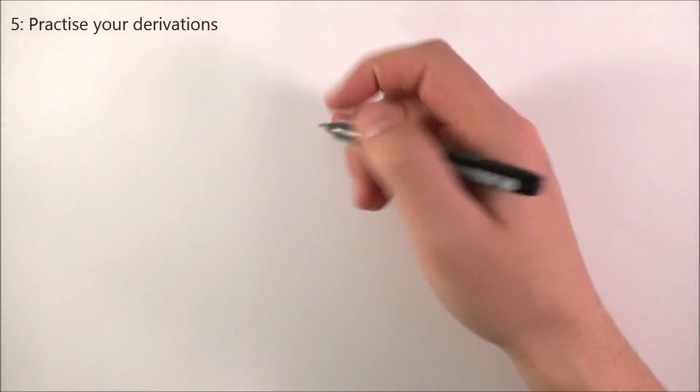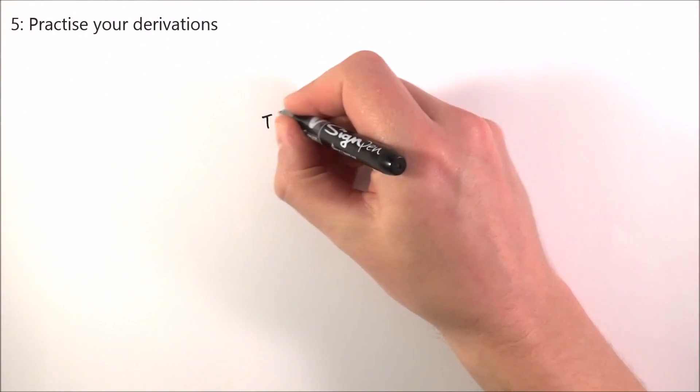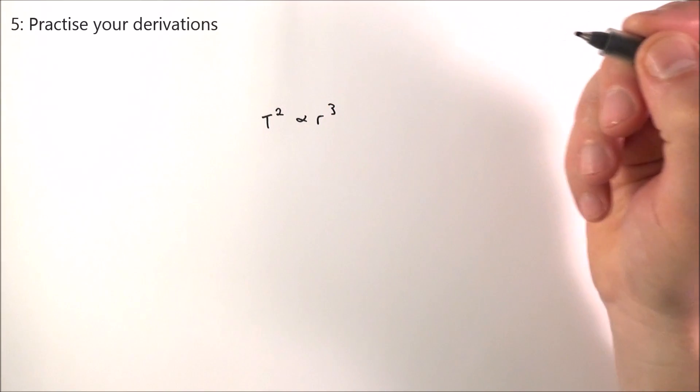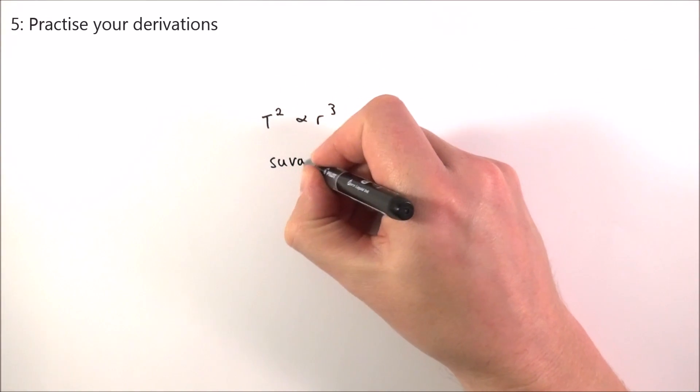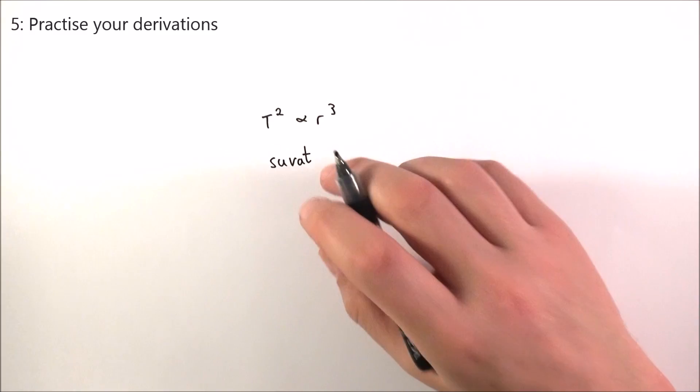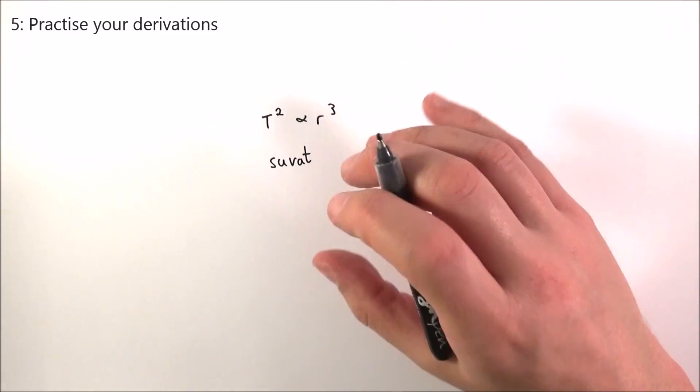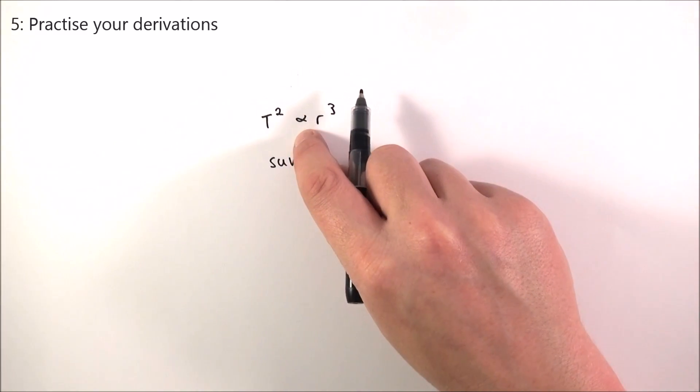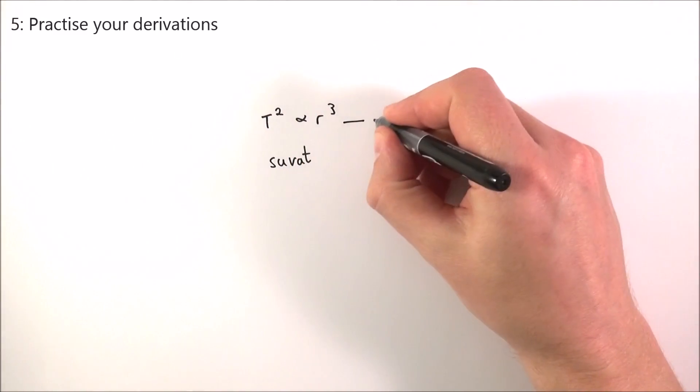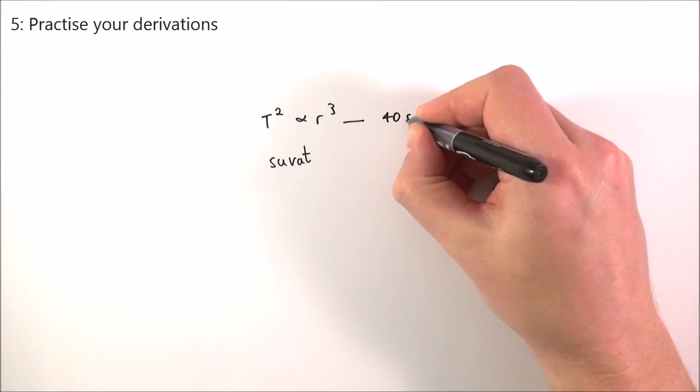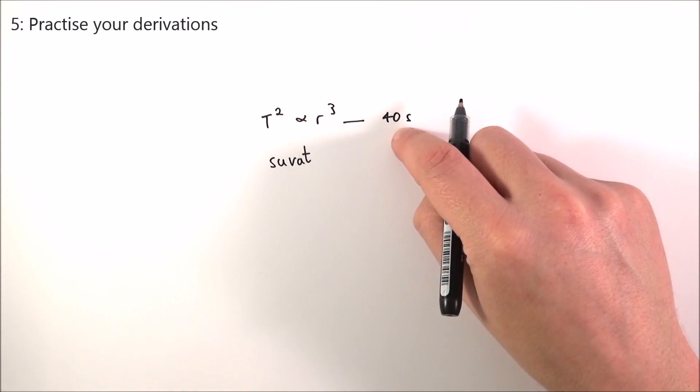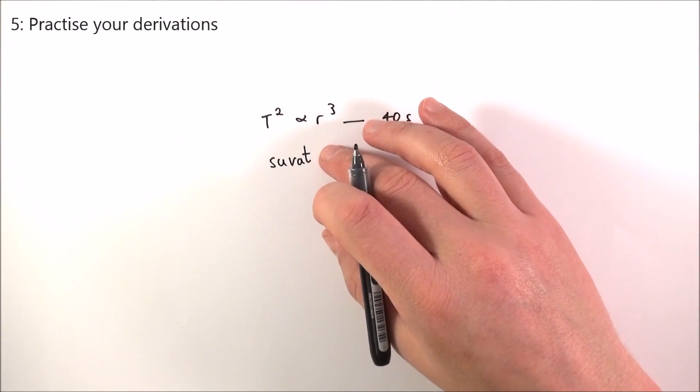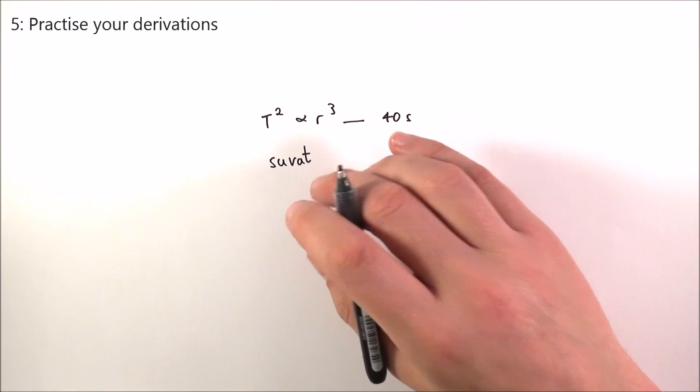Number five are the derivations. For example at A-level year 13 you might need to show that T squared is proportional to R cubed. In AS physics you might need to derive the Suvatt equations from first principle. Anything that you get asked to derive in the exam is in the specification. This might be worth three marks but you can derive that in 40 seconds if you practice it. Just like the definitions, you just know them. There's absolutely no excuse to get any derivations of equations wrong in the exam.